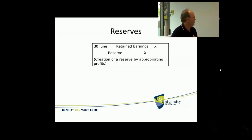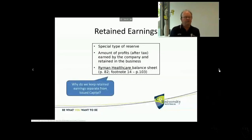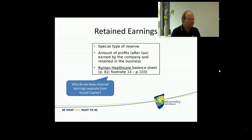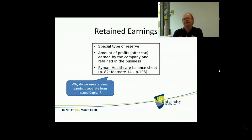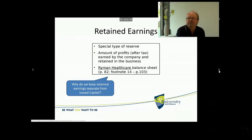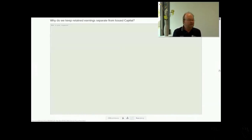We transfer out of retained earnings into reserves, but various reserves can also have other comprehensive income transferred through them. Retained earnings is a special type of reserve — the amount of profits after tax earned by the company and retained in the business. We can pay dividends out of retained earnings to distribute to shareholders, but what's not distributed remains as retained earnings. Our first question: why do we keep retained earnings separate from issued capital? Isn't it all just equity?